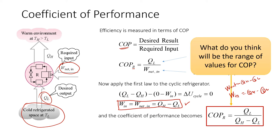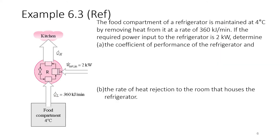What kind of values are we expecting for COP? For thermal efficiency it's between 0 and 1, or 0 to 100 percent. For COP it will be different — just by looking at the equation, we know that the numerator QL is of higher value than the denominator work input, so that will result in an answer bigger than 1. So the typical value for COP of a refrigerator is greater than 1.